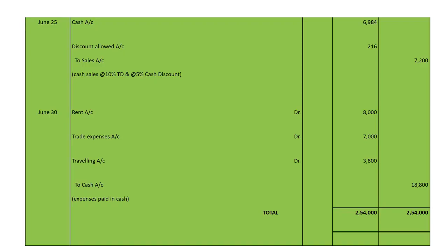Last entry: paid rent, trade expenses, and traveling expenses. This is a combined entry since all are expenses paid in cash. Entry: Rent account debited 8,000, Trade Expenses account debited 7,000, Traveling account debited 3,800, to Cash account 18,800. Total of all debit and credit entries for this question: 254,000 debit and 254,000 credit. Narration: expenses paid in cash.